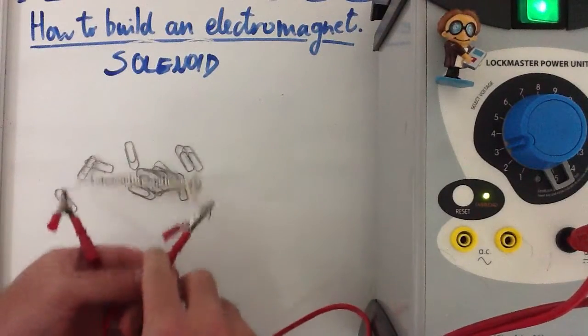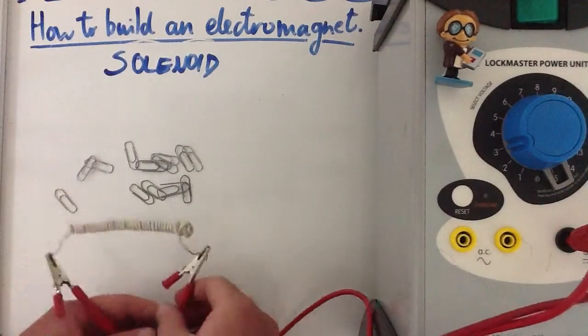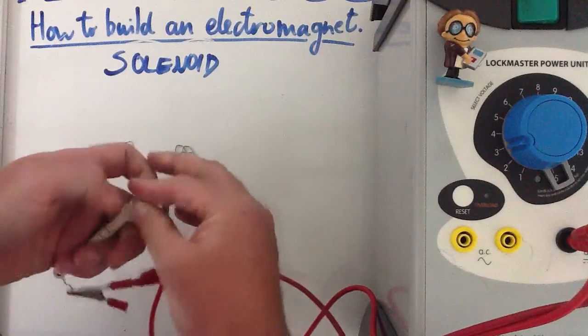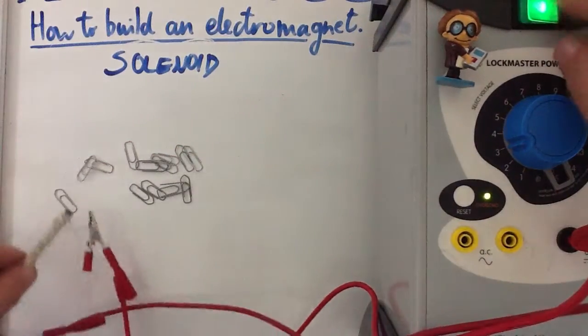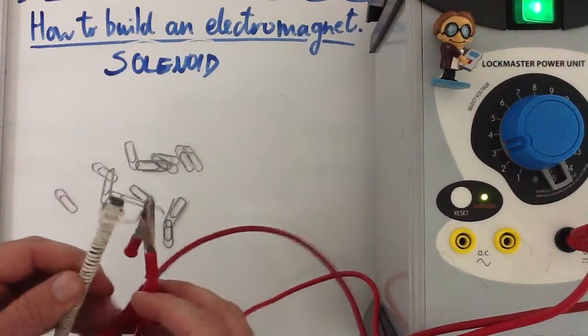As you can see, this electromagnet isn't the strongest, so what I'm going to do is try and make it stronger. I'm going to add a magnetic material, in this case an iron nail down the middle, and let's try it now. There we go, picking up a few paper clips there.